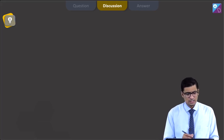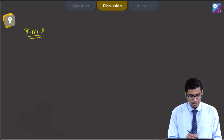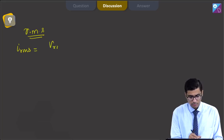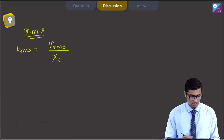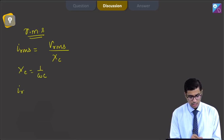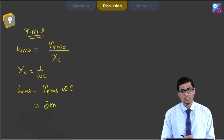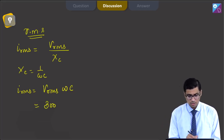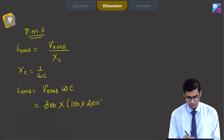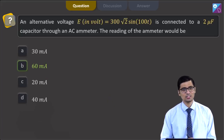An AC ammeter reads the RMS value of the current. The RMS current equals the RMS voltage divided by the capacitive reactance, where capacitive reactance is 1/(ωC). So I_rms = V_rms × ωC. Here V_rms = 300 (since 300√2 is the peak value), ω = 100, and C = 2×10⁻⁶ F. This gives 60 milliampere. The correct answer is option B, that is 60 milliampere.